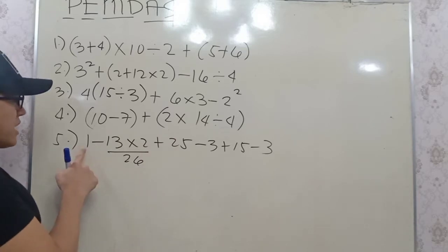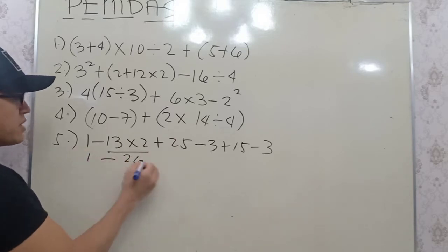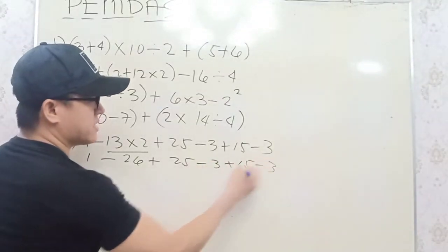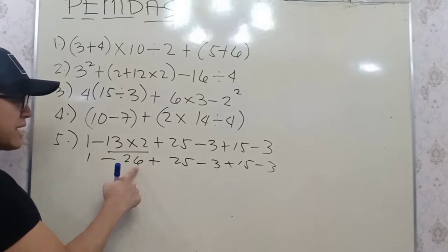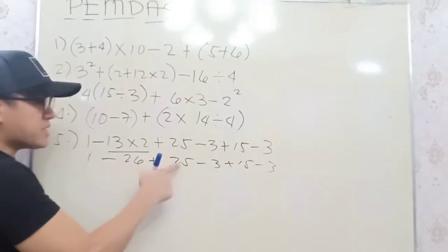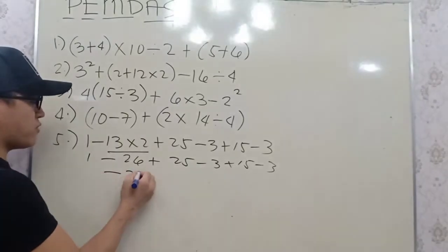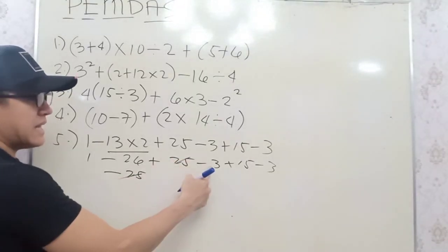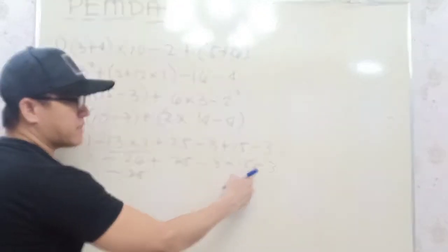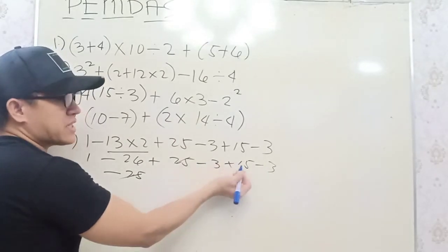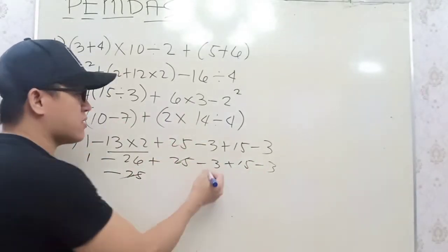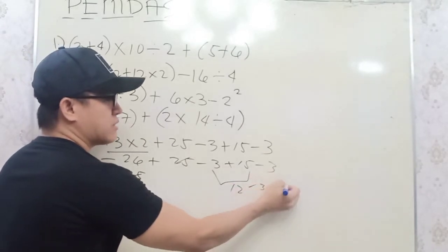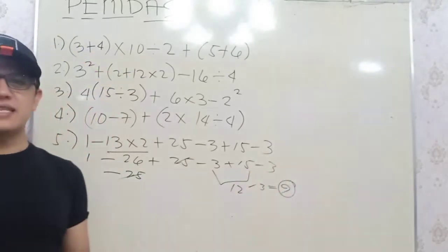This becomes 1 minus 26 plus 25 minus 3 plus 15 minus 3. So, 1 minus 26 is negative 25. Plus 25 — those cancel out. And then negative 3 plus 15 is just like 15 minus 3, which becomes 12. Minus 3, that is equal to 9. So the final answer is 9.